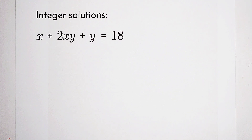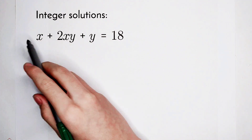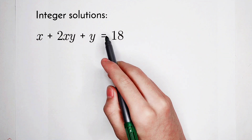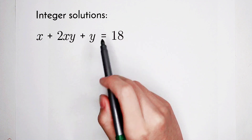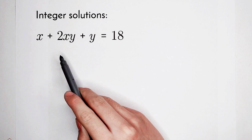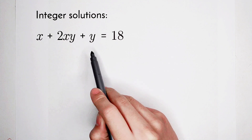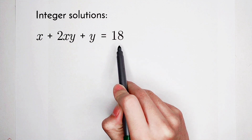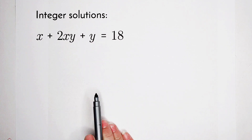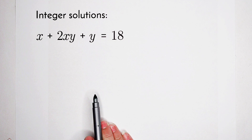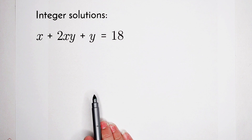Welcome back to Math Window. Solve the integer solutions of this equation: x plus 2xy plus y equals 18. How should we start solving it?